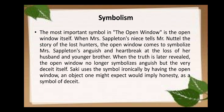When we look at symbolism, the title itself is the most important symbol — the open window. When Vera tells Frampton Nuttall the story of the lost hunters, the open window comes to symbolize the anger, heartbreak, pain, and loss of Mrs. Sappleton at the death of her husband and younger brother, as narrated by Vera. But when the three men come back through the open window, the truth is revealed. The open window then no longer symbolizes anguish but deceit — a lie cooked by this girl. Saki uses the symbol ironically: an object one might expect to imply honesty and transparency is here a symbol of deceit.